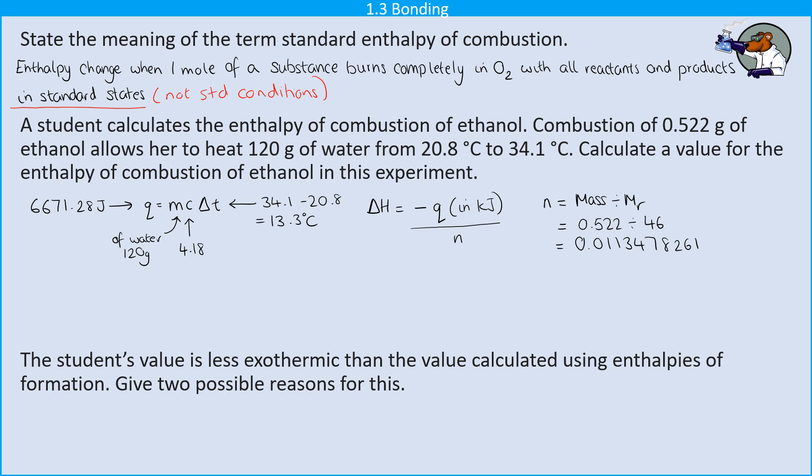And again, I am not going to round that value. Make sure that you're either writing down your full calculated display or using the answer button. So I'm going to take my value for Q and I'm going to put that into kilojoules. So divide it by 1,000 and then divide it by the number of moles I've just calculated.